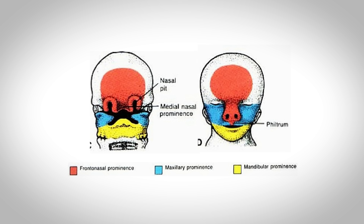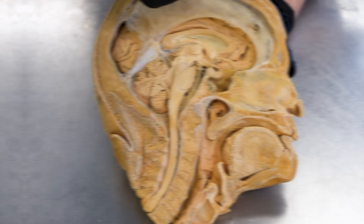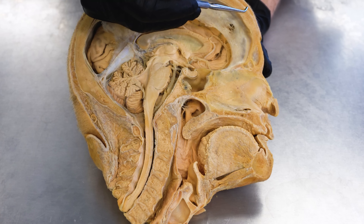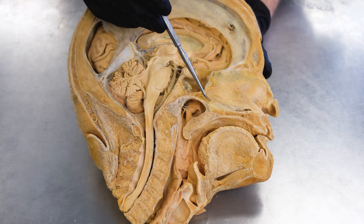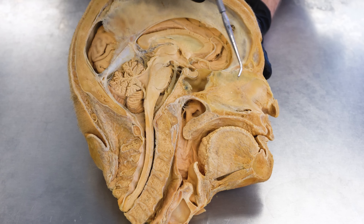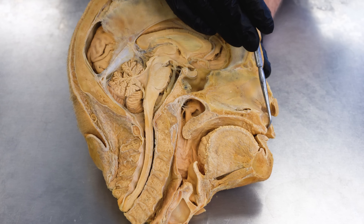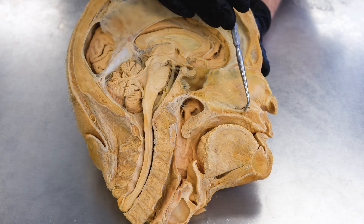If we look at the head aspect of that embryo, there are two masses of tissue we need to understand. The first is called the frontonasal prominence. The frontonasal prominence creates the central core of your face — it creates part of your forehead, the frontal bone, the nasal cavity, the nasal septum, and then it wraps around to create the middle part of your upper lip.